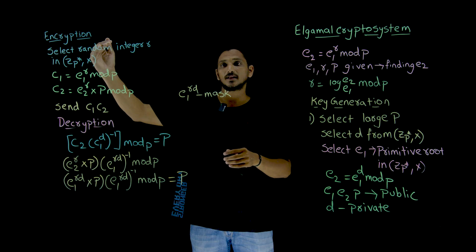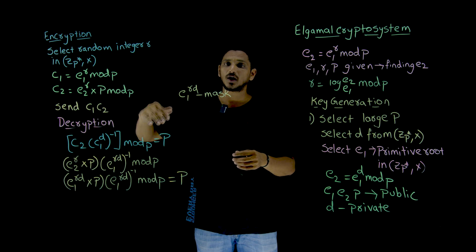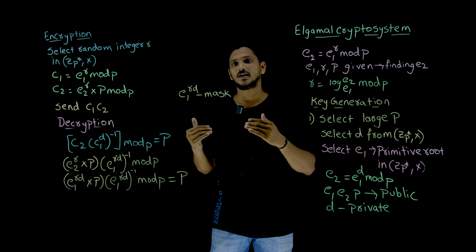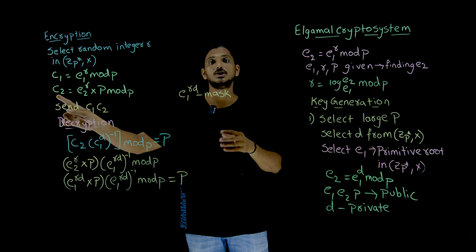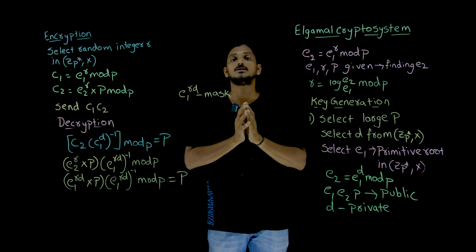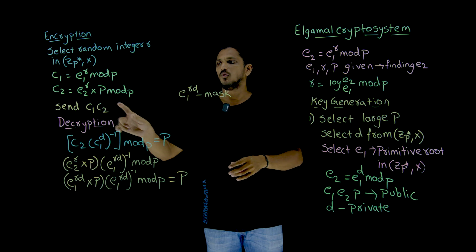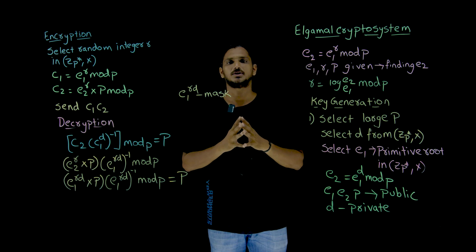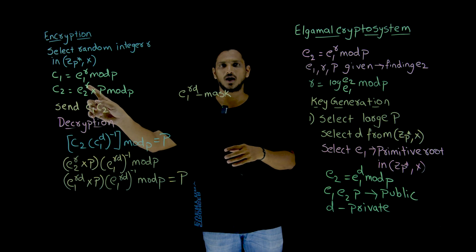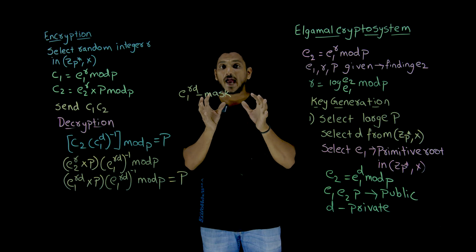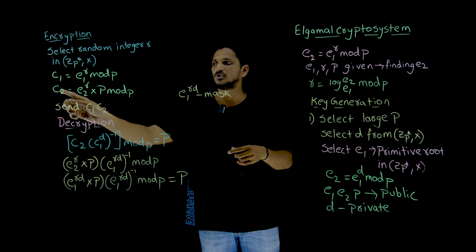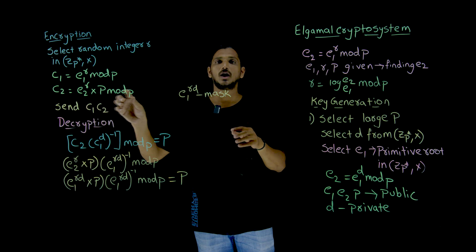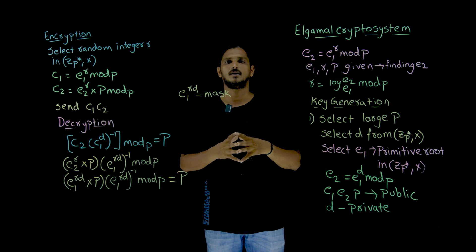So indirectly, if c1 is sent to the receiver, the r value is embedded inside it — the same way e2 was given to the sender with d embedded inside. The sender then also generates c2, where the actual masking — the actual encryption — happens: c2 equals e2 power r multiplied by the plaintext P, all mod p. The actual encryption is in c2, which contains the actual data. The sender sends both c1 and c2 to the receiver.